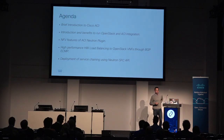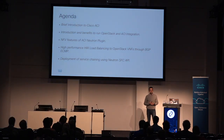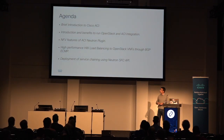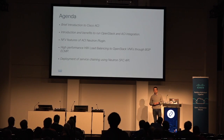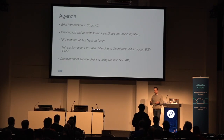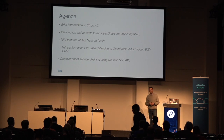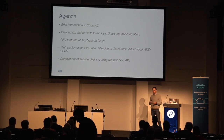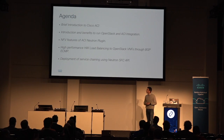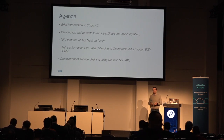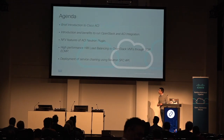The agenda today is going to be split across different things. Since we are talking about Cisco ACI and OpenStack, we're going to have a brief introduction about Cisco ACI and what it is. We're going to understand why you may want to run Cisco ACI together with OpenStack and what the benefits are. Then we're going to go more towards the NFV challenges that our customers typically have, and how with Cisco ACI you can better solve those challenges. Cisco ACI and OpenStack — better together, if you will.